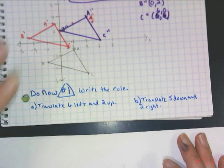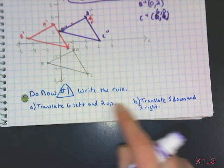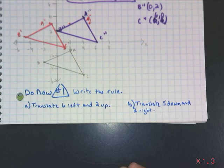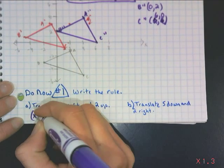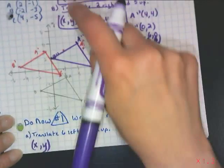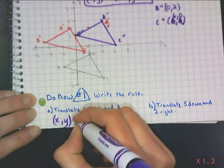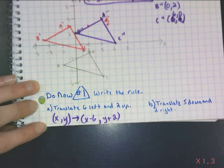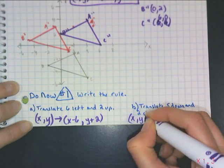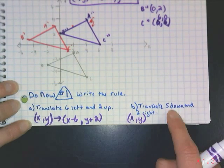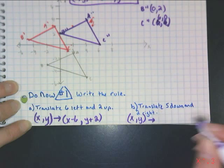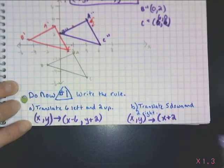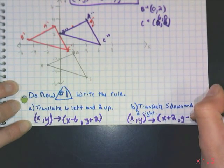For Do Now number 1, write the rule. Note down the verbal description first, then the algebraic rule. For A: going left means subtracting from X, and 2 up means adding to Y — so the rule is (X − 6, Y + 2). For B: 2 right means adding to X, and 5 down means subtracting from Y — so the rule is (X + 2, Y − 5).